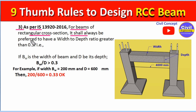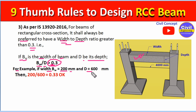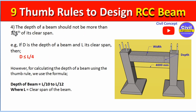Point number three: according to IS code, for a beam of rectangular cross section, it shall always be preferred to have a width-to-depth ratio greater than 0.3. The width and depth depend on the load, but we prefer the ratio not less than 0.3. For example, if width (Bw) is 200 mm and depth (D) is 600 mm, then Bw/D = 0.33, which is greater than 0.3, so the design is acceptable.